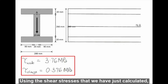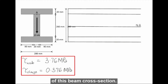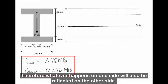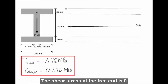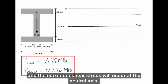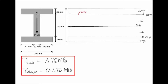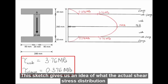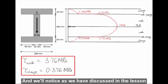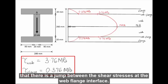Using the shear stresses we have calculated, we can make a sketch of the shear stress distribution of this beam cross-section. Since the cross-section is symmetric, whatever happens on one side is reflected on the other. The shear stress at a free end is 0, and the maximum shear stress occurs at the neutral axis. Notably, there is a jump between the shear stresses at the web-flange interface, as discussed in the lesson.